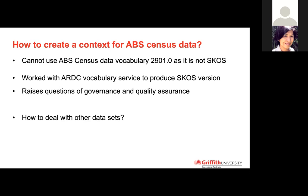How to create a context for ABS census data: ABS census data is available on the web in HTML as well as in a downloadable format. The data co-op is looking at converting that into SKOS with the ARDC vocabulary service, so there will be a URI, making it easier to use in the tagging and JSON-LD syntax. The data co-op project is working with the ARDC vocabulary service. There are some demo versions available already; however, there could be questions of governance and quality assurance, so that is under discussion.